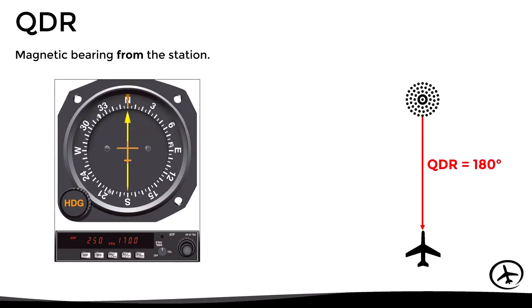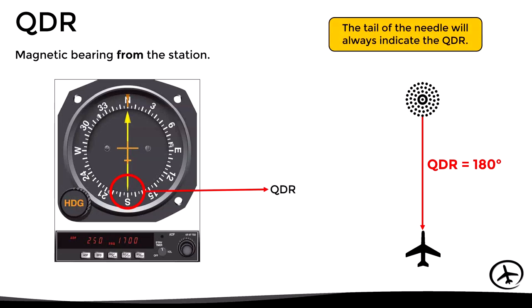On the other hand, the QDR is the magnetic bearing from the station, which means that it indicates the direction in which the aircraft is located in relation to the NDB station. According to this definition, in an ADF or RMI, the tail of the needle will always indicate the QDR, which in this particular case is 180.